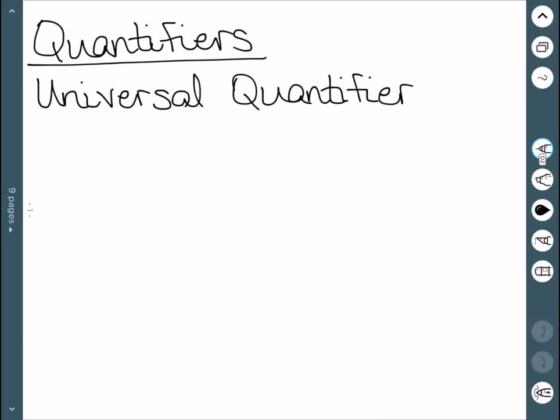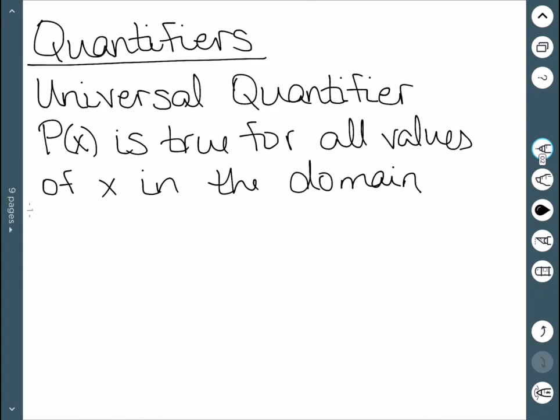Here we'll look at two different kinds of quantifiers for predicates. The first is the universal quantifier, which tells us that our predicate is true for all values of x in the domain.